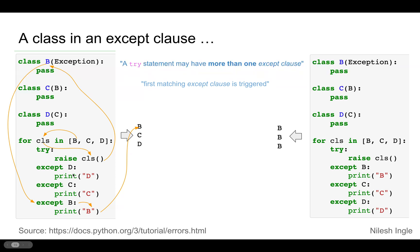However, on the flip side, if you look on the right-hand side code, we have switched the orders of the except clauses. D, C, B, we now have B, C, D.